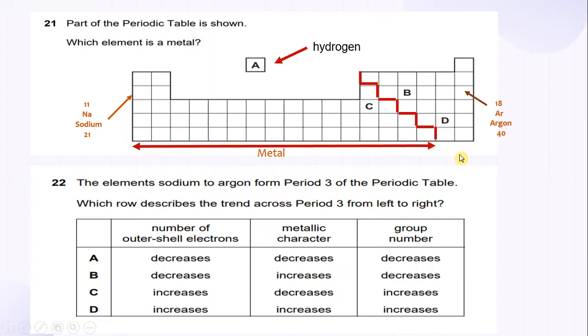So the answer for this question, which element is a metal? The answer is C. The element sodium, which is here, to argon form period 3 of the periodic table. This is the argon. Which row describes the trend across period 3 from left to the right? As you can see, number of outer shell electrons increases from sodium to argon. And in terms of metallic character, it's decreasing. And in terms of the group number, it increases. So the most suitable answer for number 22 is C.